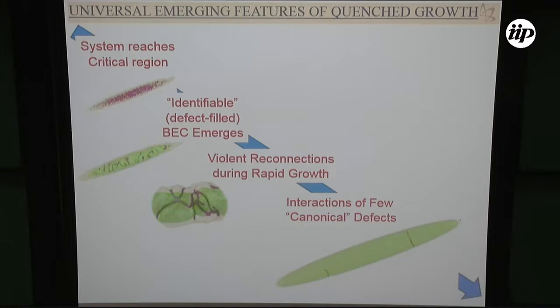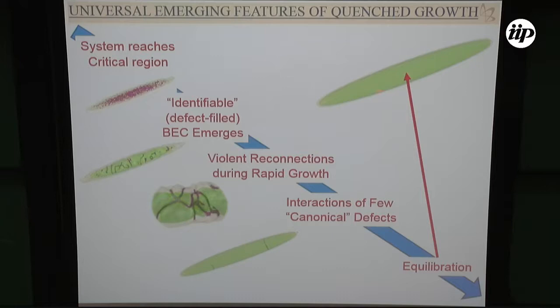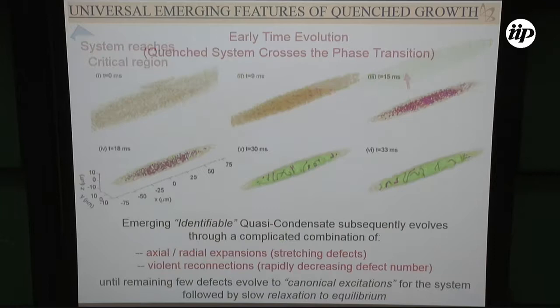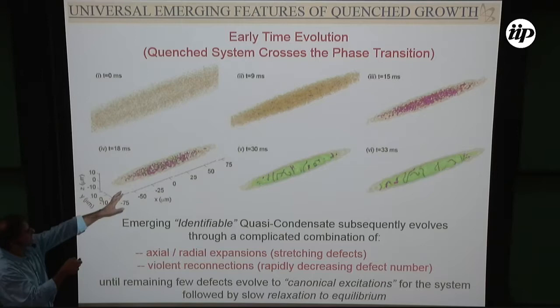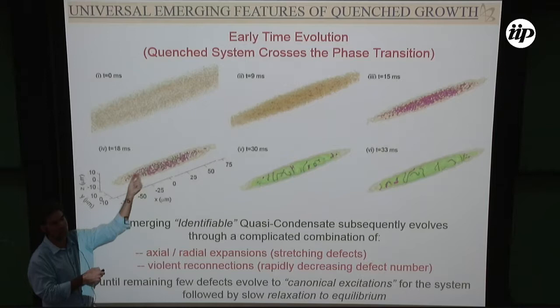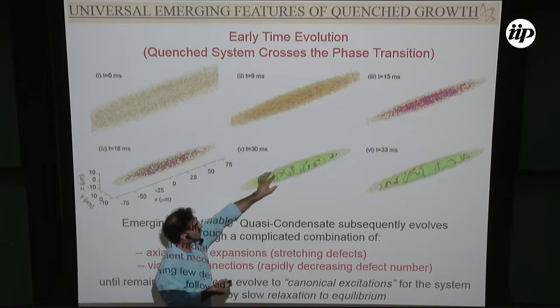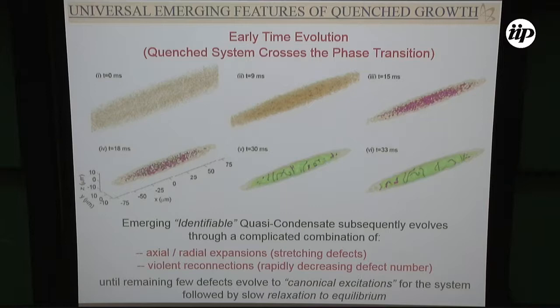In all simulations I've started from a given initial condition and gone to a given final condition, so my condensate for all different rates is always the same at the end. Here's a close-up snapshot of crossing the phase transition — all these random defects emerge very fast. Then you see high-density green regions forming pockets of condensate with different phases, and gradually as defects die away the phase unifies. But it's a very complicated process with axial and radial expansion stretching the defects.